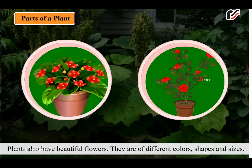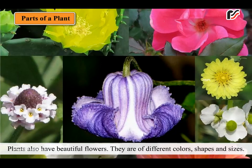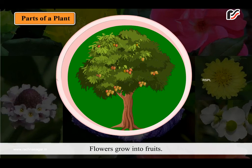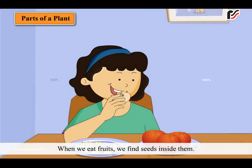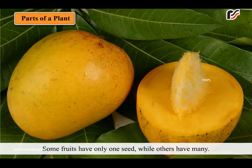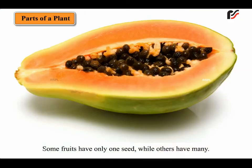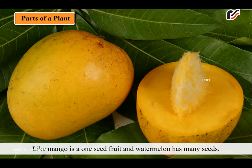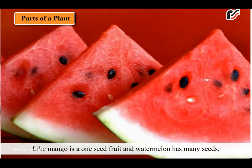Plants also have beautiful flowers. They are of different colors, shapes and sizes. Flowers grow into fruits. When we eat fruits, we find seeds inside them. Some fruits have only one seed while others have many, like mango is a one-seed fruit and watermelon has many seeds.